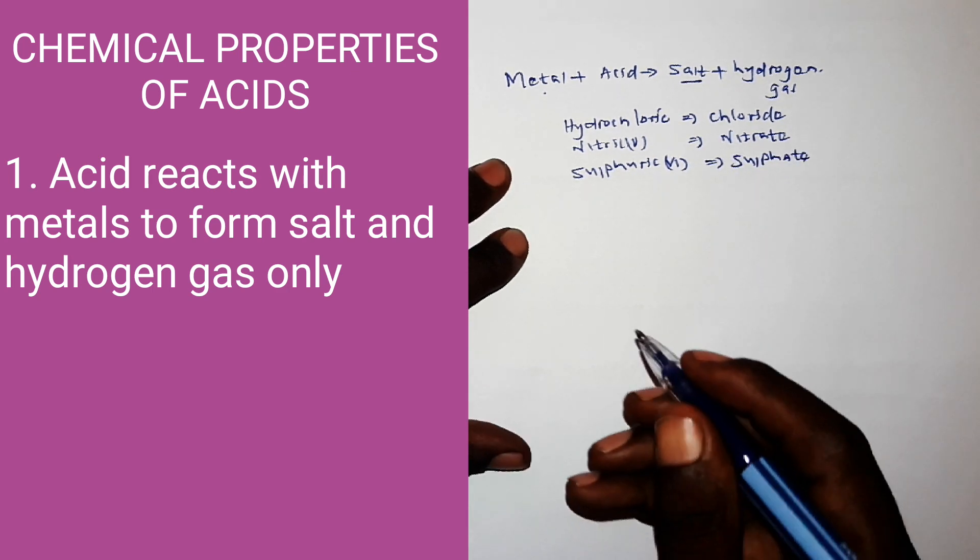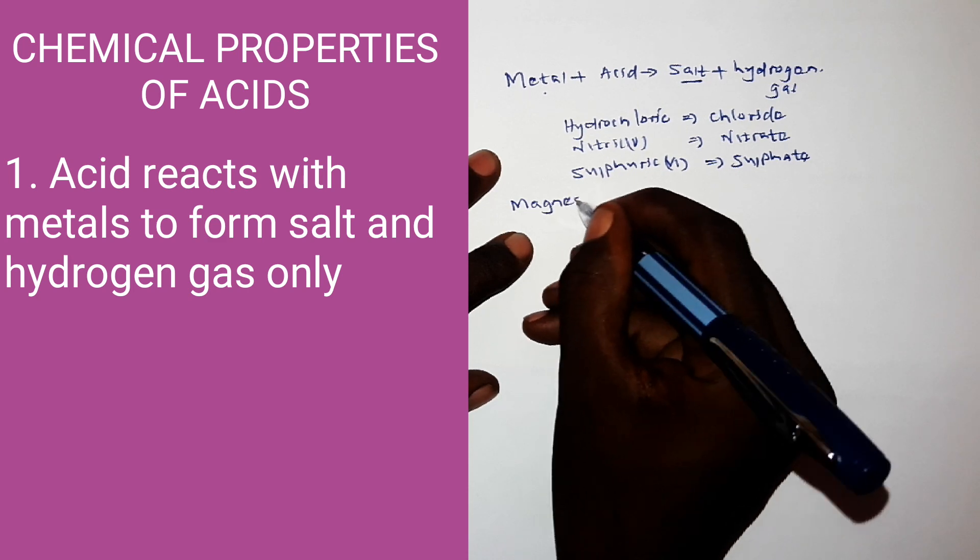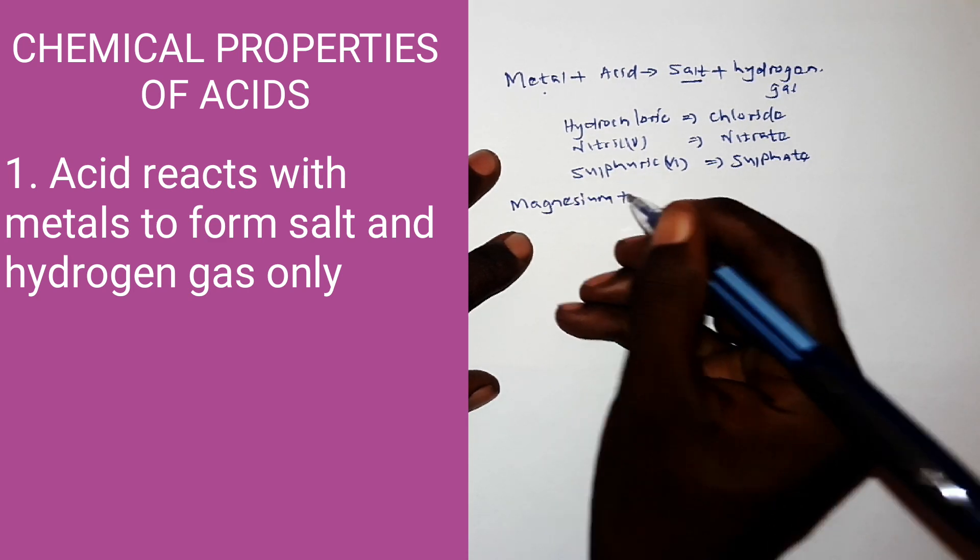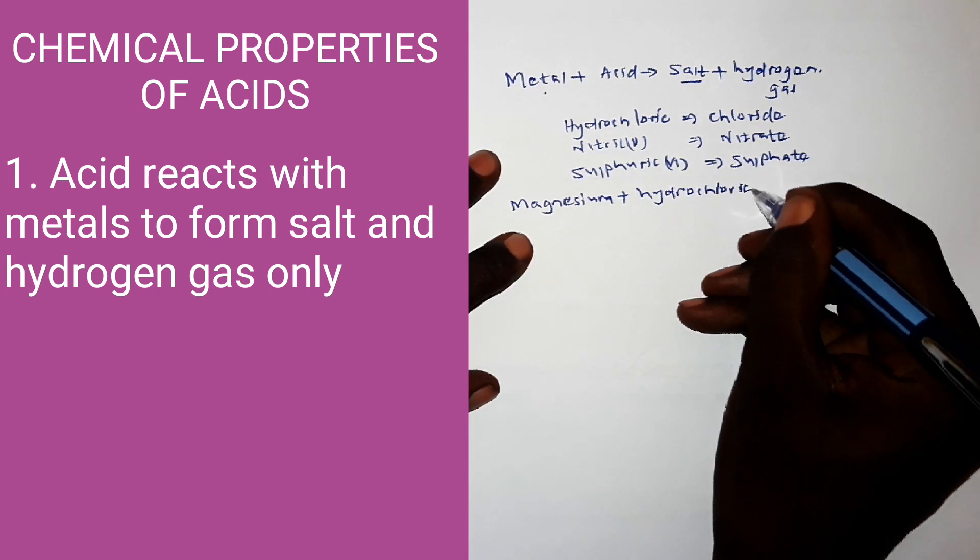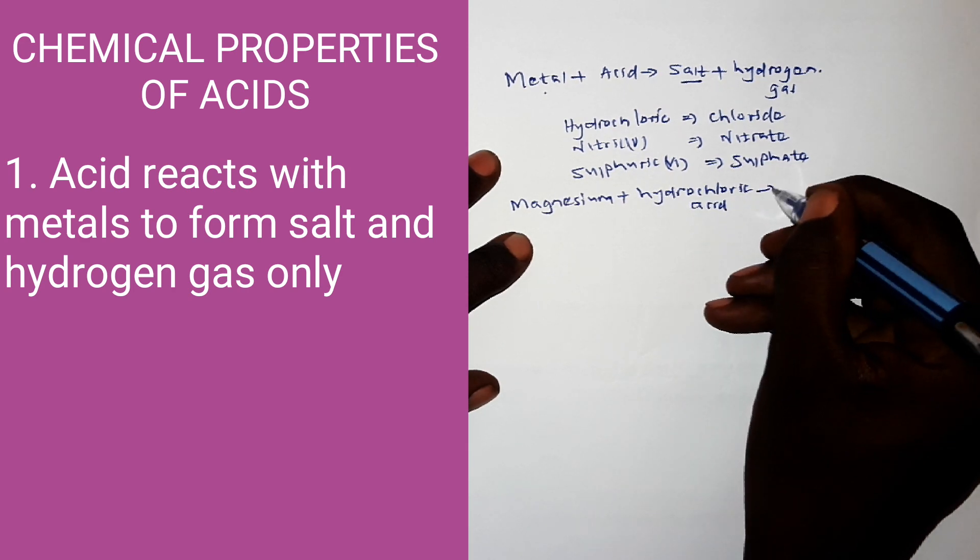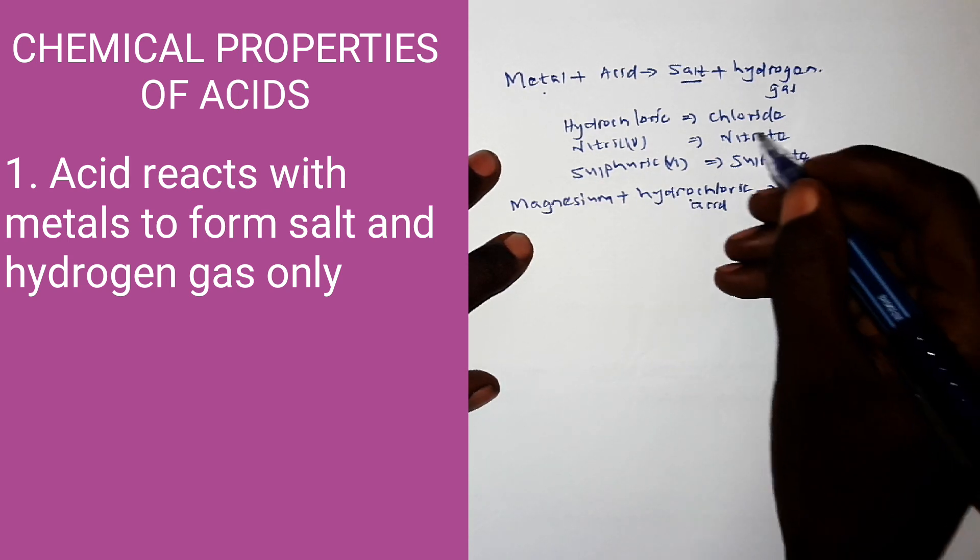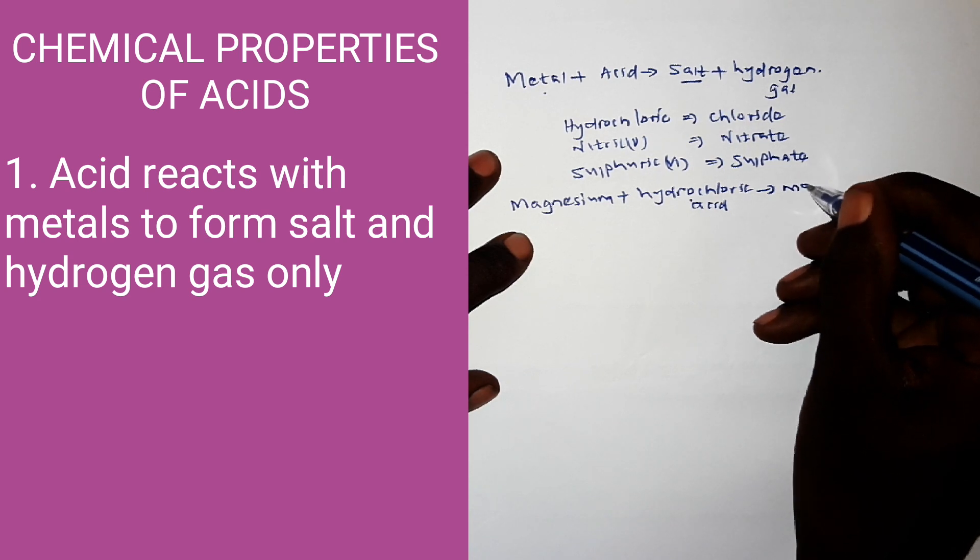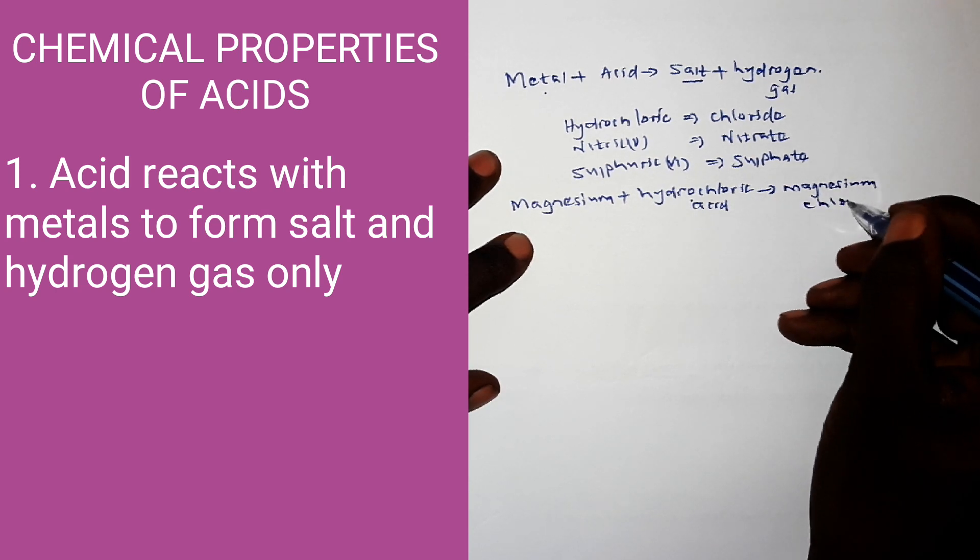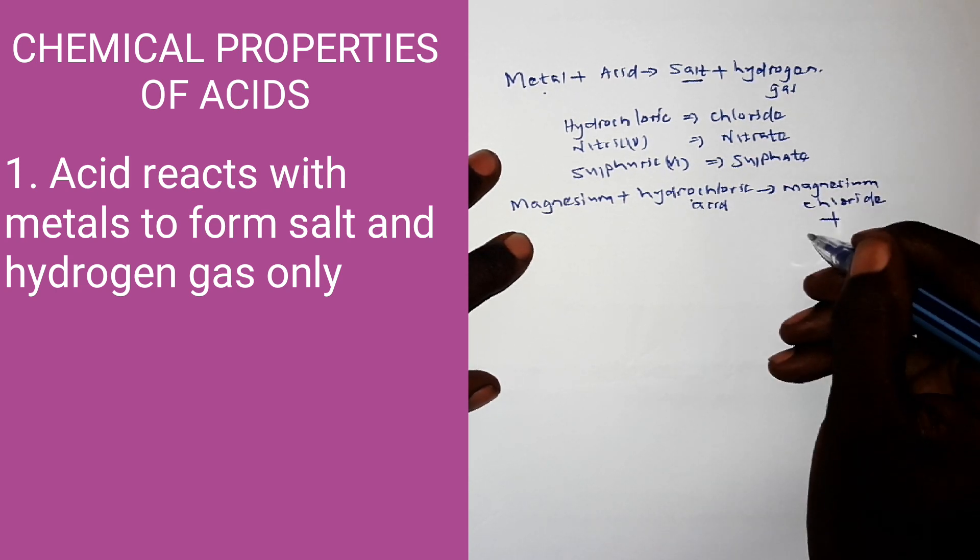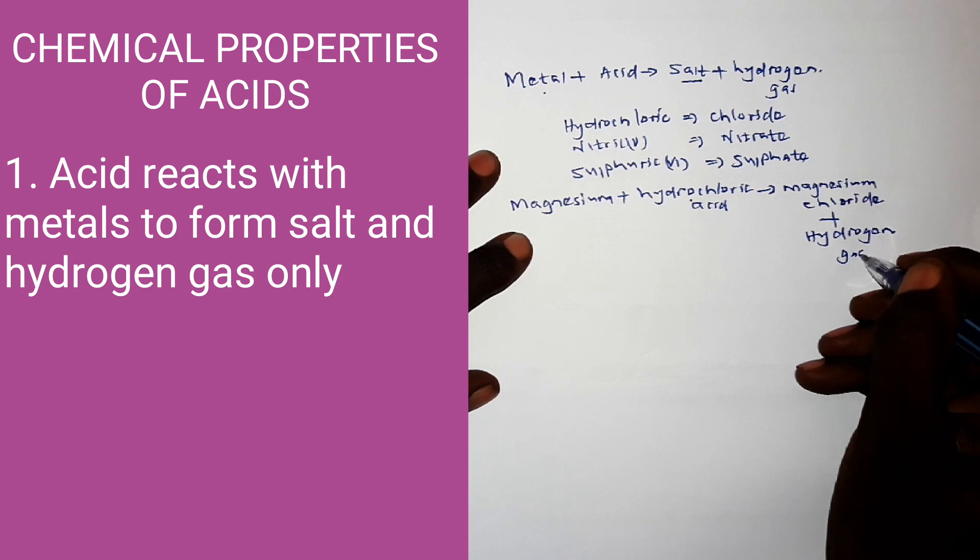So for example, magnesium plus hydrochloric acid. The name of the salt, I look at this magnesium here and the acid here. The acid, this name of the acid here changes to chloride. So the salt becomes magnesium chloride plus hydrogen gas. So that is a word equation.